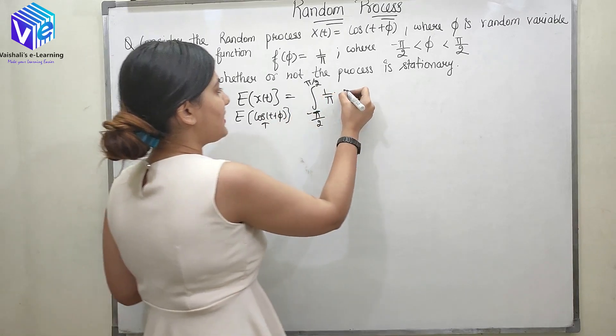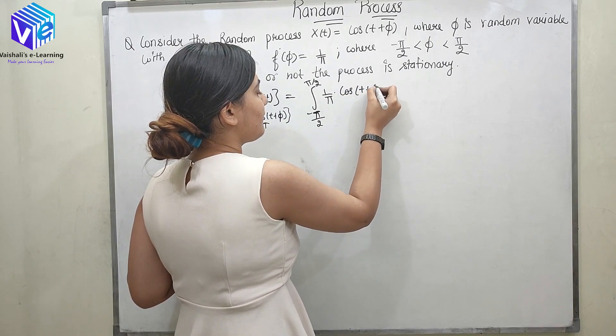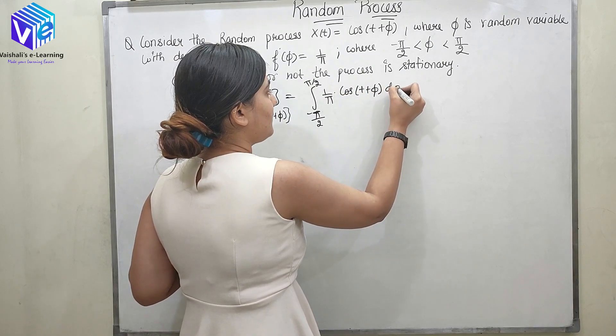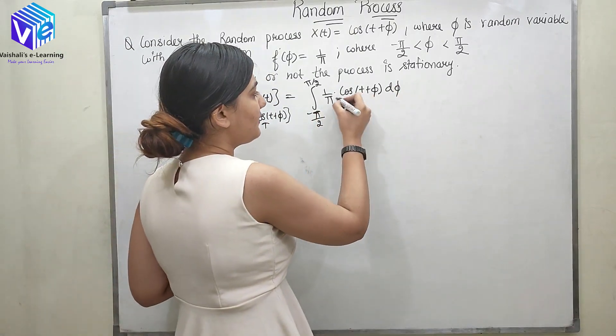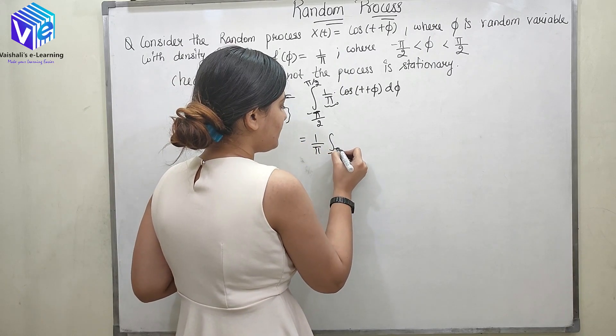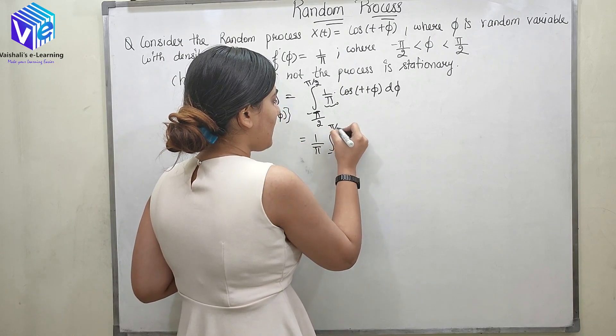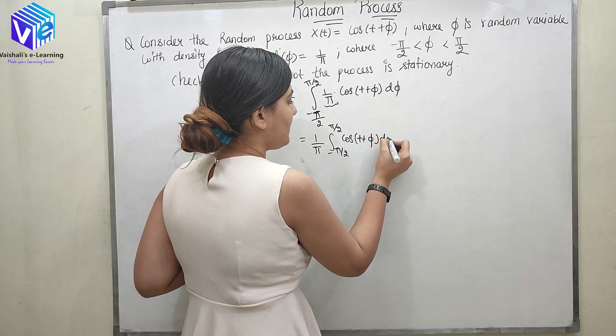Now this is my g(t). So I will multiply 1/π with cos(t + φ) dφ. Now when I integrate this, so this is my constant, so it would come outside. Now it is minus π/2 to π/2 cos(t + φ) dφ.